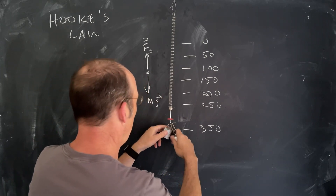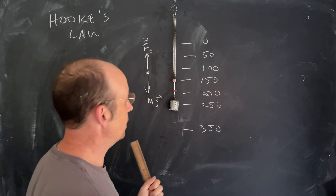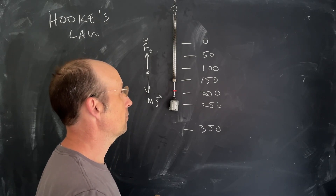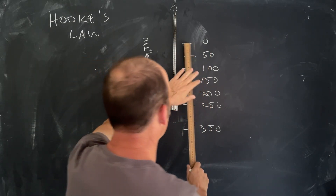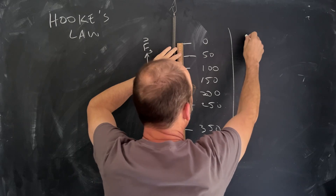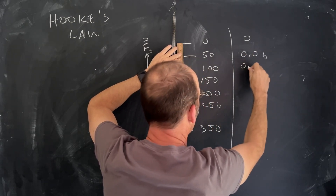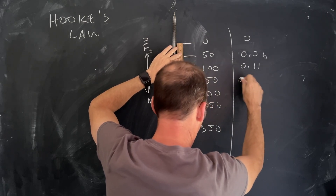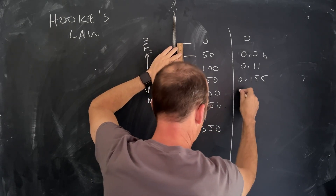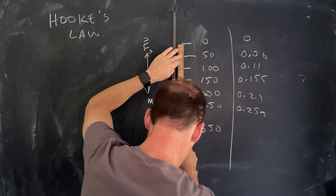I'll take off everything but the 200 gram mass and now measure these distances. I'm going to call downward the positive y direction. Measuring from zero, the values in meters are: 0, 0.06, 0.11, 0.155, 0.21, 0.255, and 0.35.